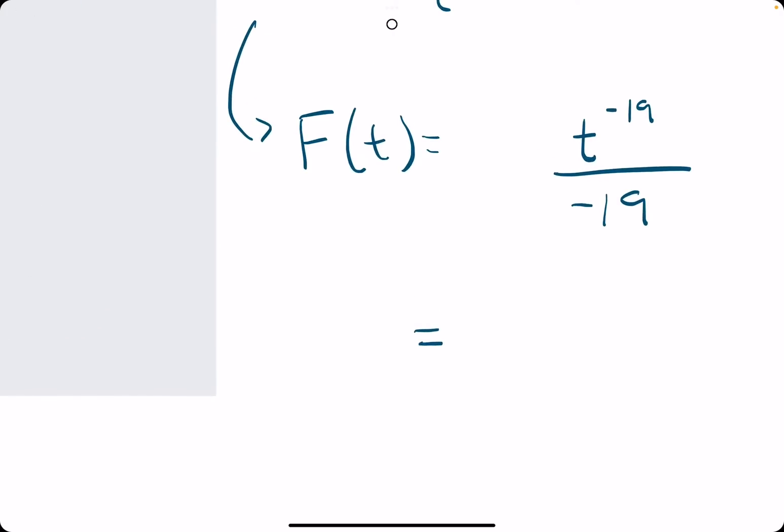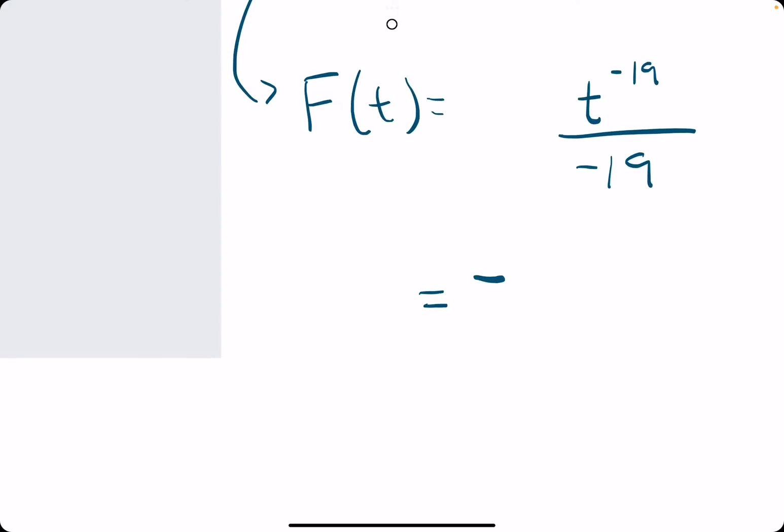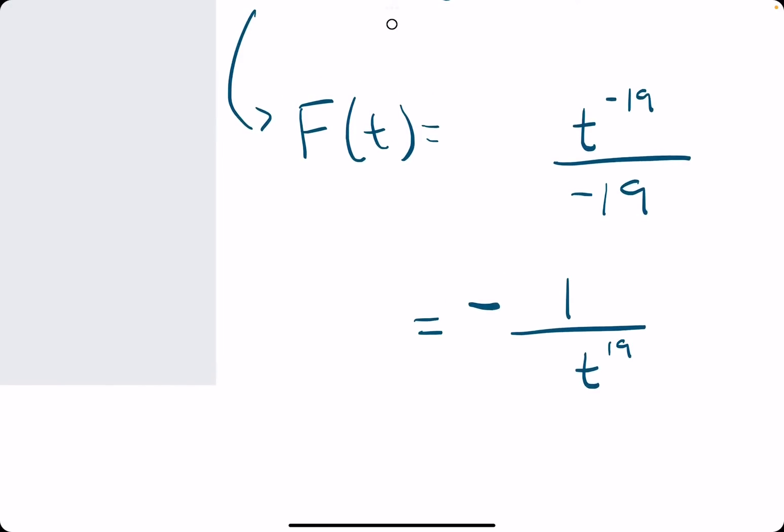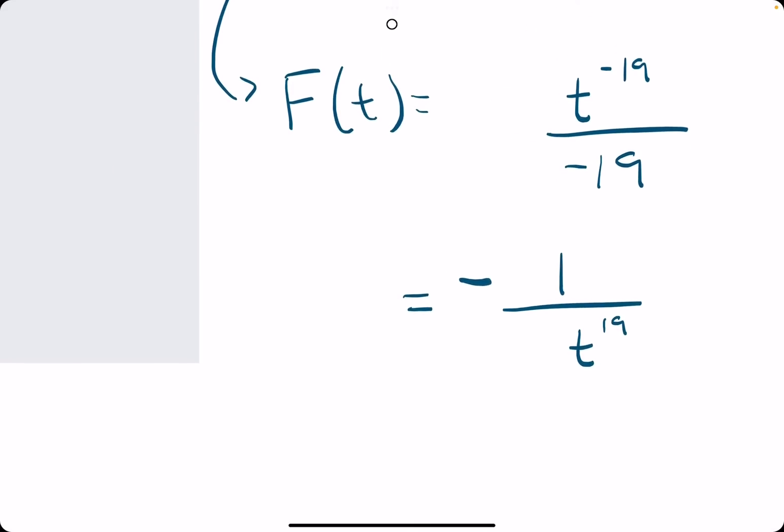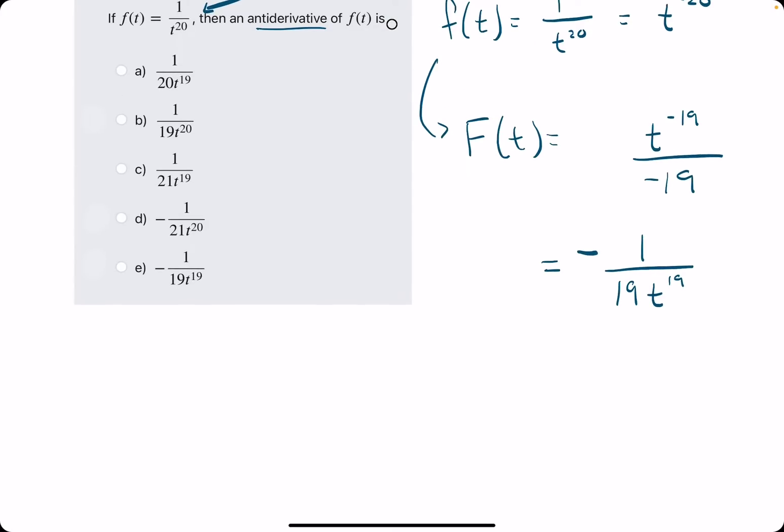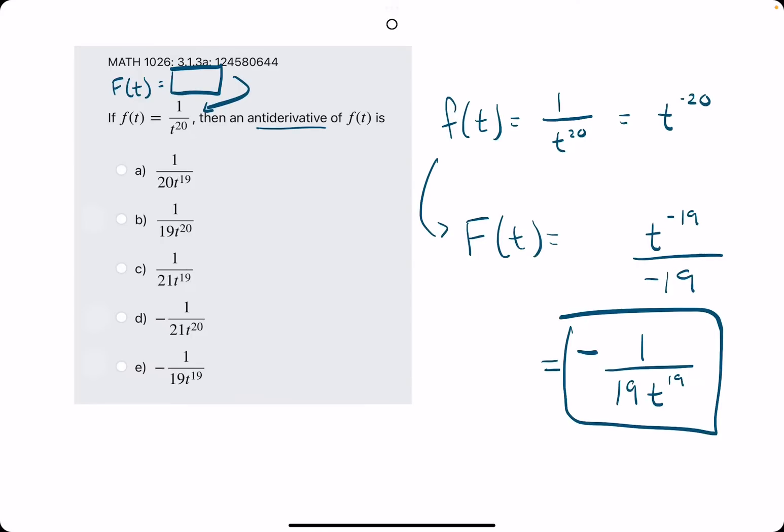But, they might rewrite it in this way. They'd probably bring the negative from the bottom, just out in front. So, t to the negative 19, they would likely rewrite as 1 over t to the positive 19. A negative exponent on top translates to a positive exponent on the bottom. And that 19 was also in the denominator, so that will just stay with that t term. Something like this is what we're looking for for our answer.